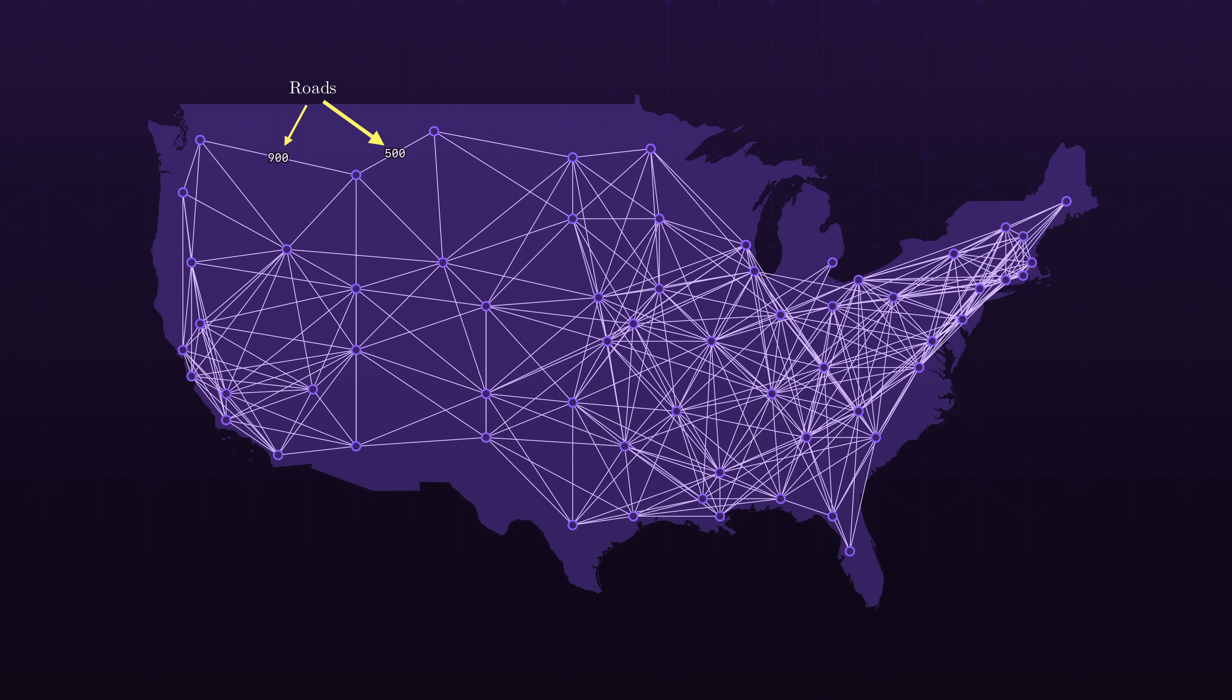Now within the framework of this graph, our problem becomes significantly more concrete. Given a starting node and a goal node, what's the best way to explore the graph and find the path of minimum distance between them?